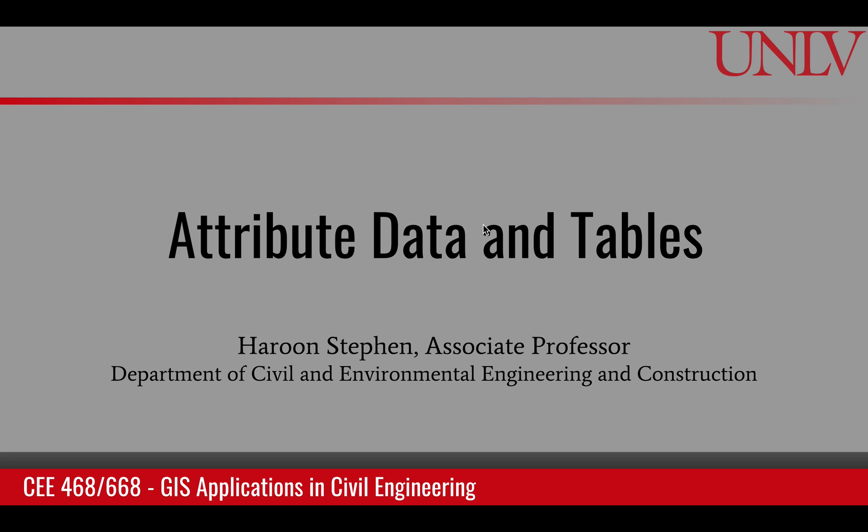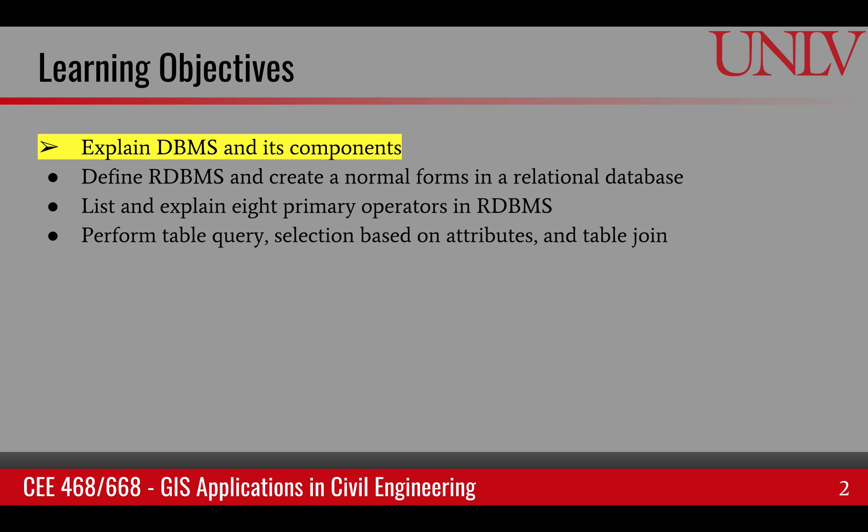This module is about attribute data and attribute tables. The learning objectives covered in this module include the database management system and its components, the definition of the relational database management system, and how it is created through the normalization process. Then, what are the eight primary operators in a relational database management system? And lastly, how to perform table queries and table joins.